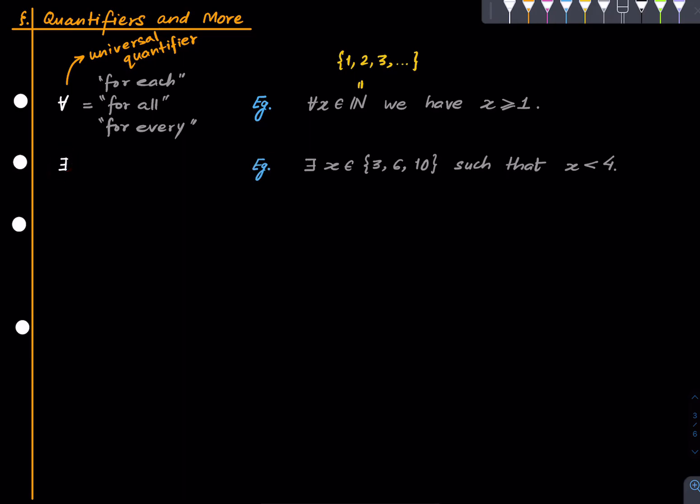This symbol ∃ stands for 'there exists', or shorthand for 'there is'. This statement reads: there exists x in this set such that x is at most 4. This is a true statement because 3 is in this set, which is less than 4. This is just a shorthand. This is called the existential quantifier.